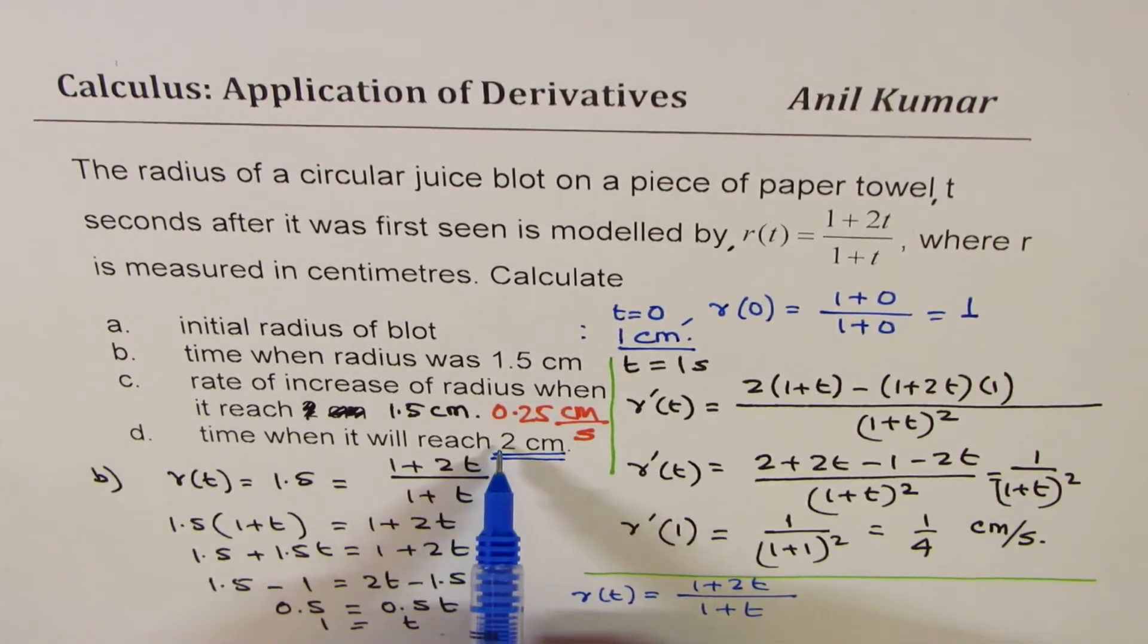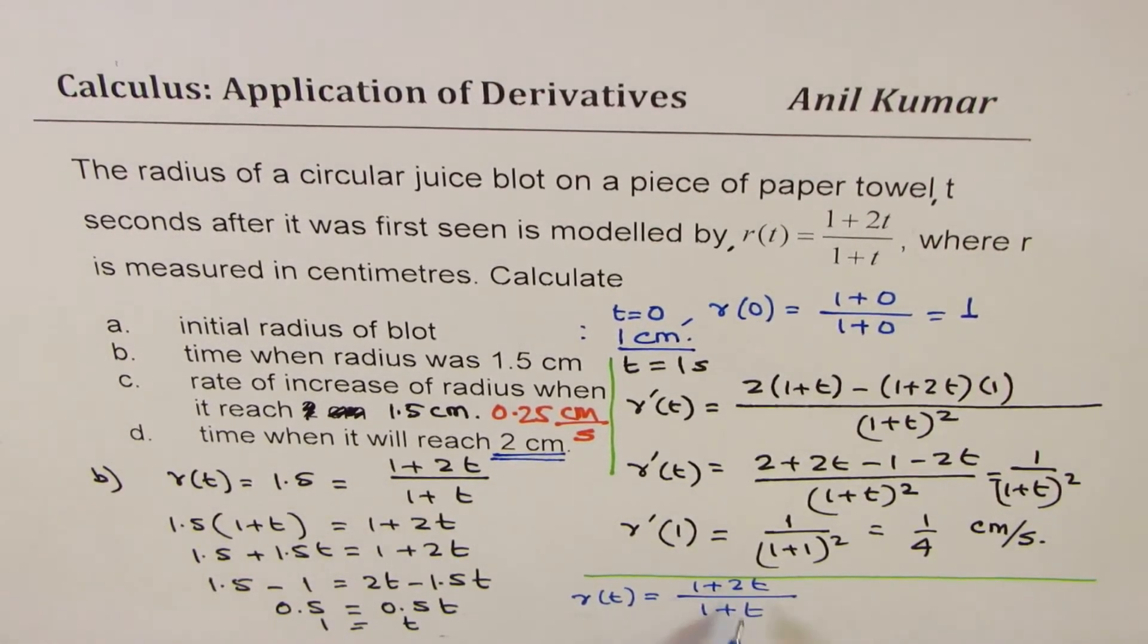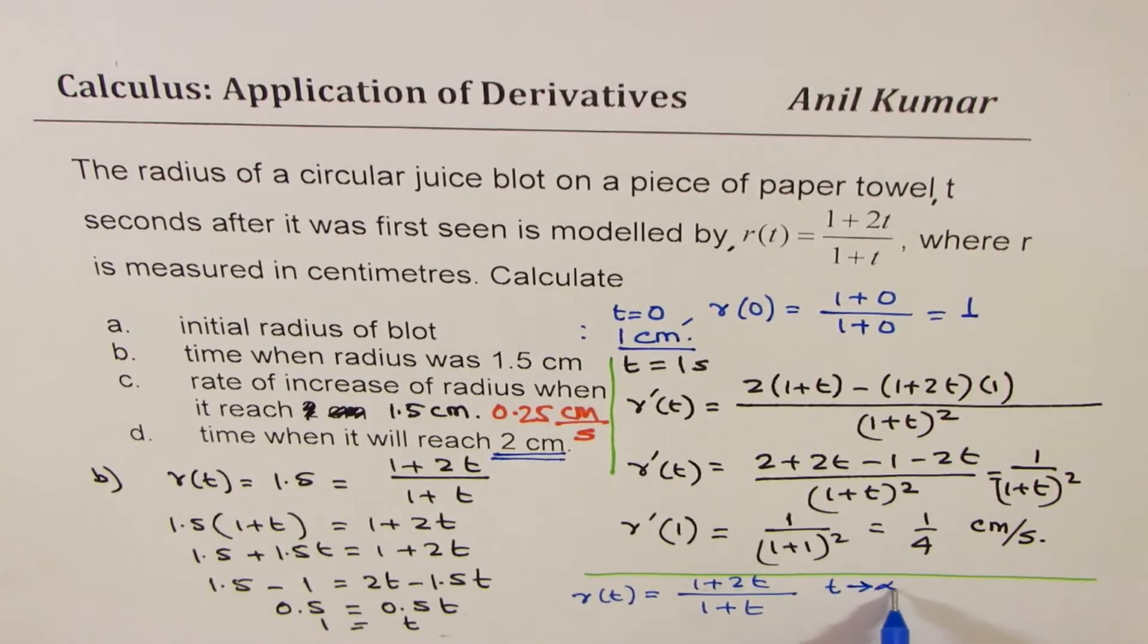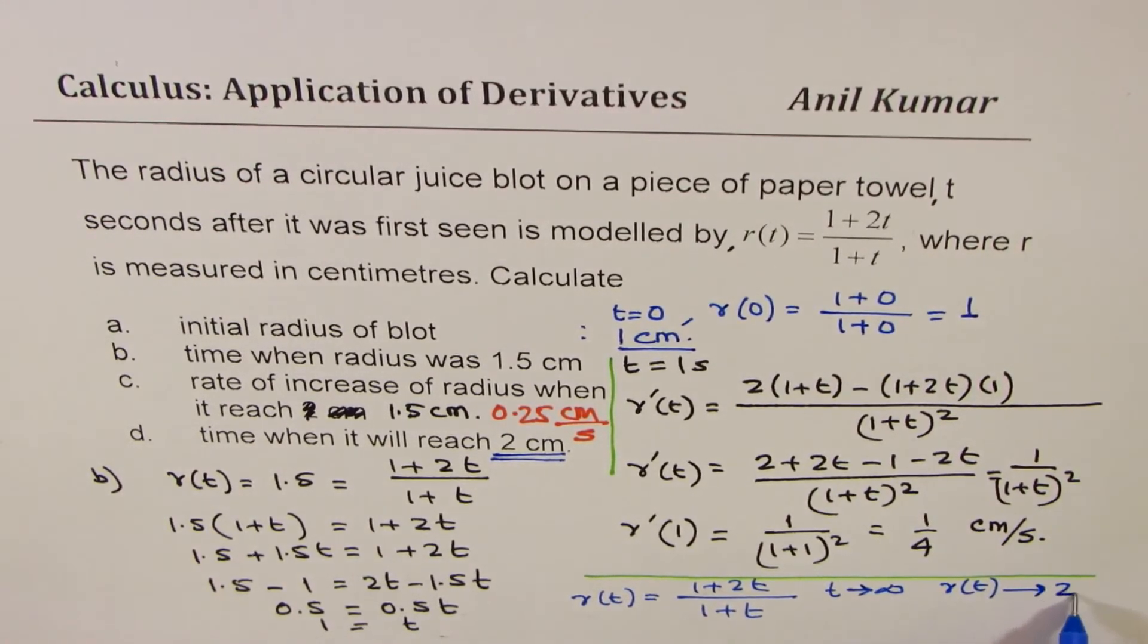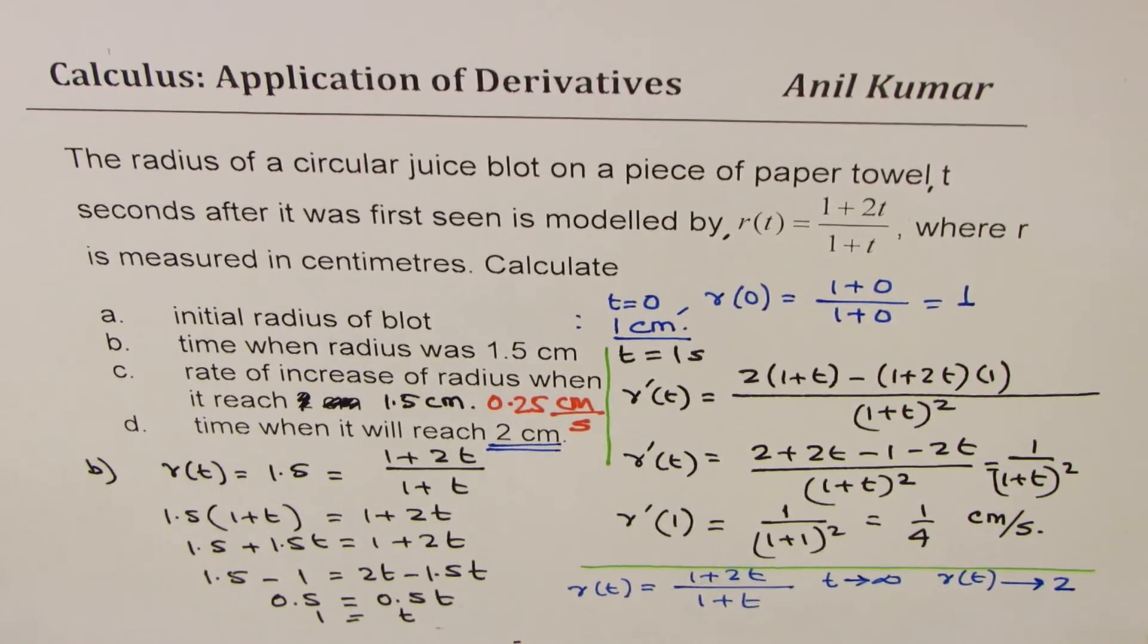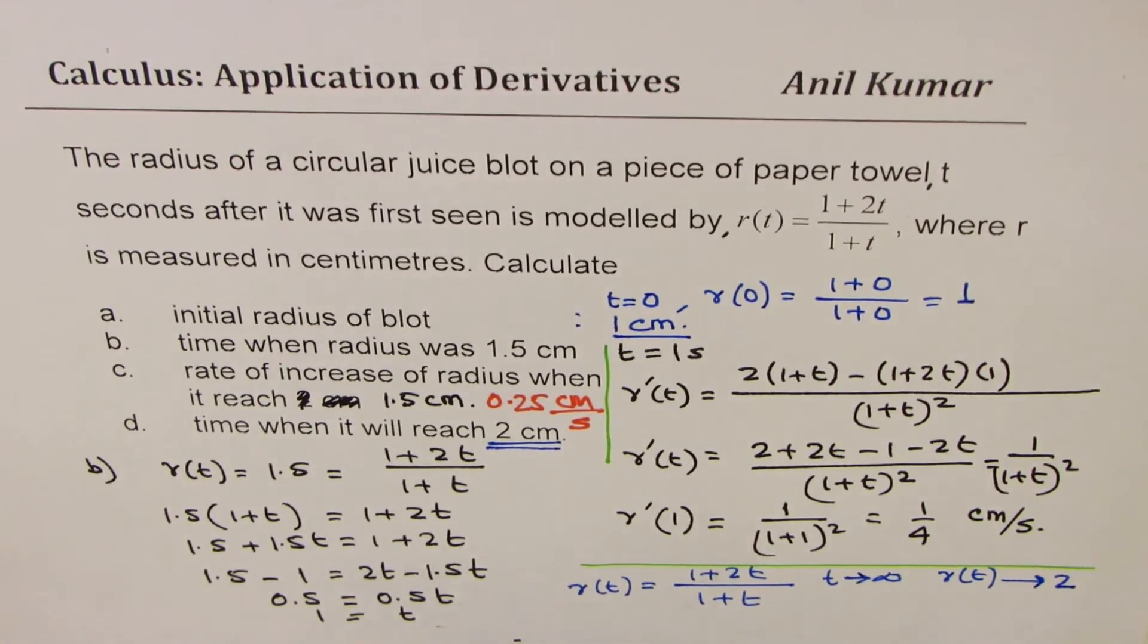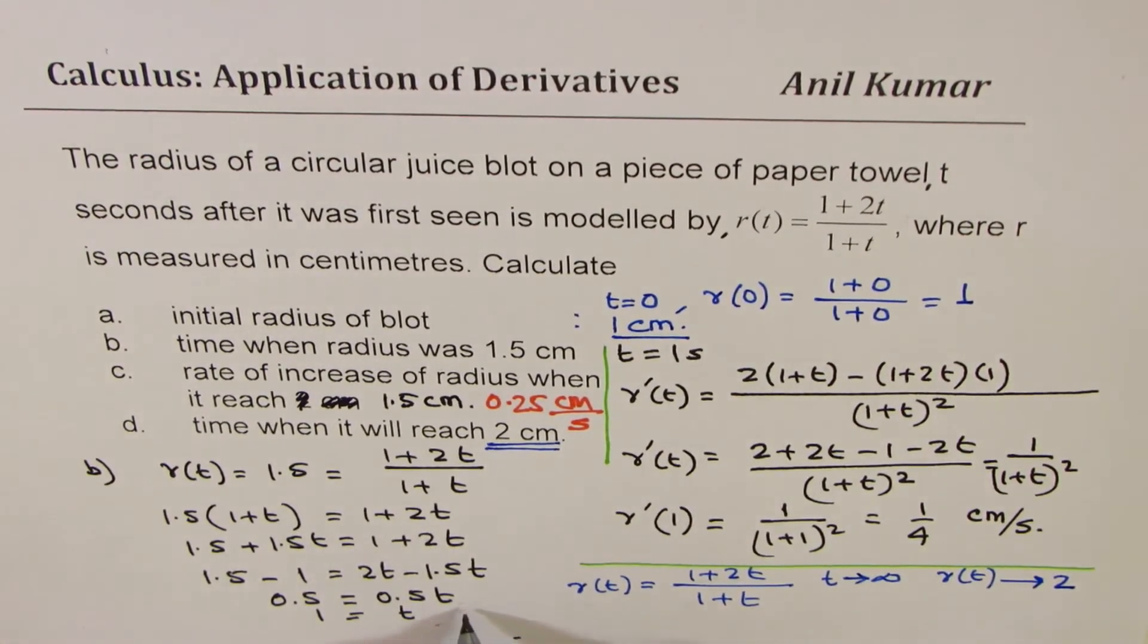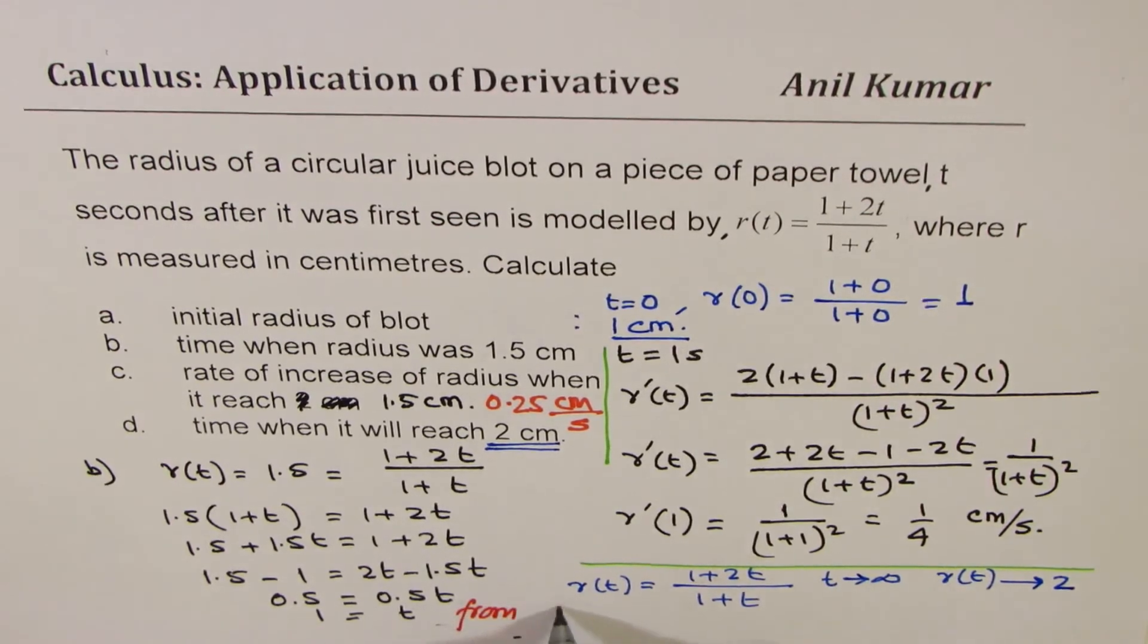If t is approaching infinity, in that case r(t) will approach 2, you see that, but it will never be 2. So the answer here is that from the given model,